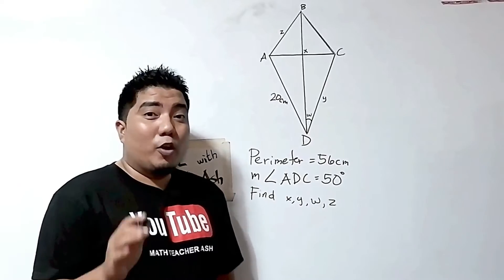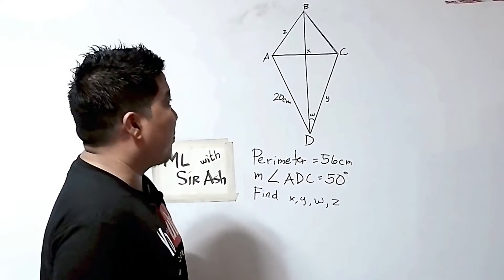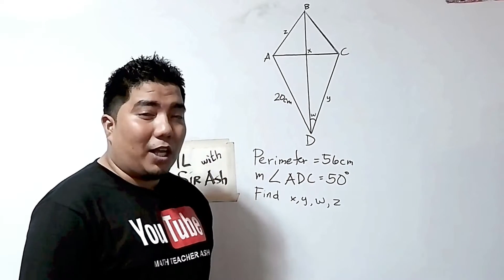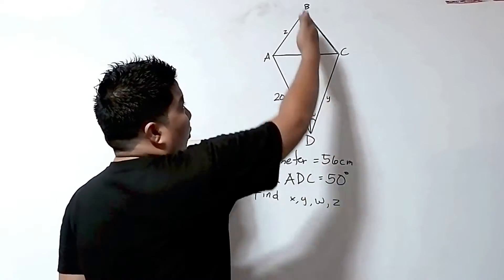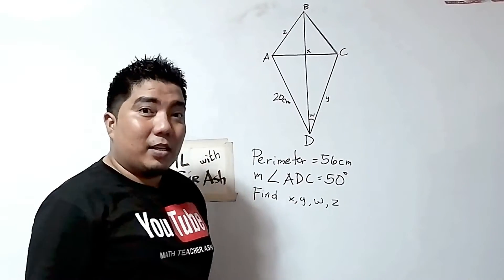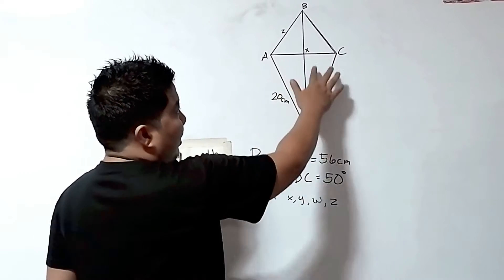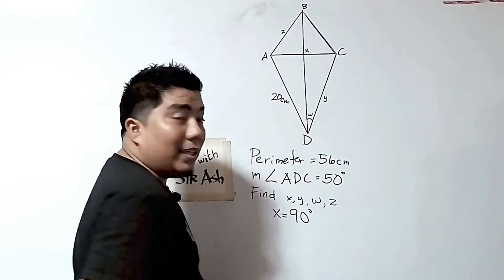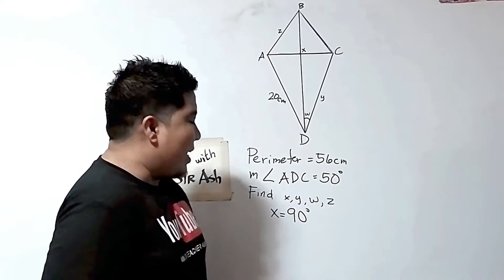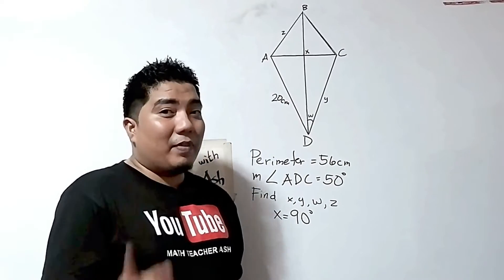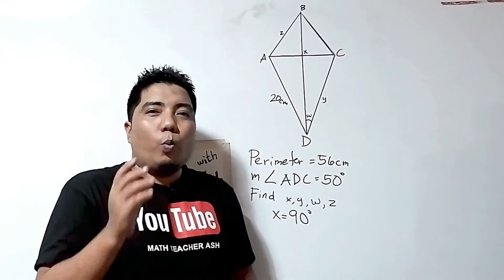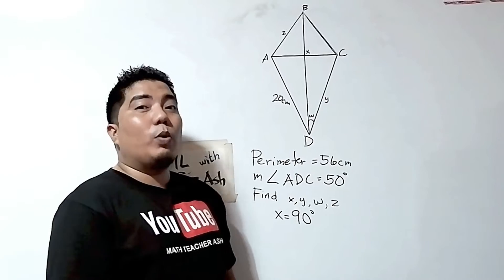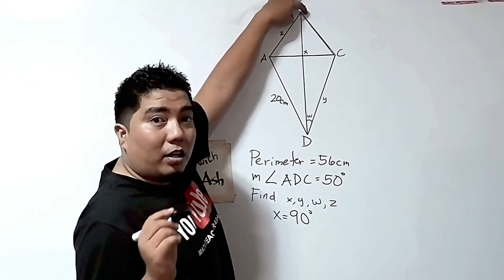First of all, let us try to understand the given. If this is a kite, then the diagonals are perpendicular with each other because that is one of the properties of a kite. Therefore, these diagonals give 90-degree angles — so each angle is 90 degrees. Therefore, the value of X is equal to 90 degrees. Next, remember that in a given kite, one diagonal will bisect the other diagonal as well as the angles that are not congruent.